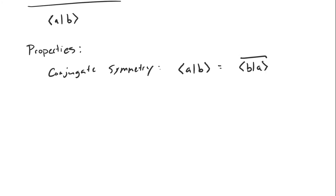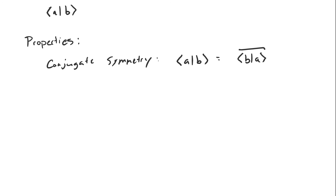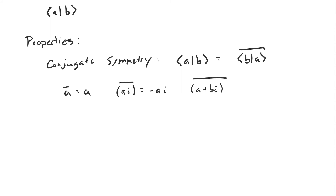Just a quick refresher on complex conjugates. The complex conjugate of a real number is just that same number, so the complex conjugate of the real number a is equal to a. The complex conjugate of an imaginary number is just the negative of that imaginary number, so the complex conjugate of ai is negative ai. And finally, the complex conjugate of a general complex number a plus bi is equal to a minus bi — the real part minus the imaginary part.